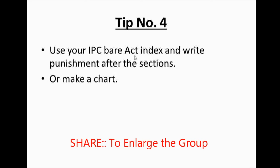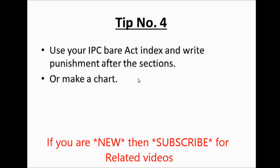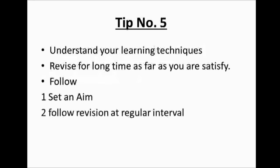Tip number four: once you have completed the book and the bare act, go to the index of the bare act and write the punishment next to the sections. Once you have done this, you will not need to open your bare act repeatedly — just look at the index daily and it will be easier to go through every section, consuming less time. If you are not comfortable with that, you can also make charts: on the left side write the section number, in the middle write the topic of the offense, and on the right side write the punishment. It will take time, so learn one by one.